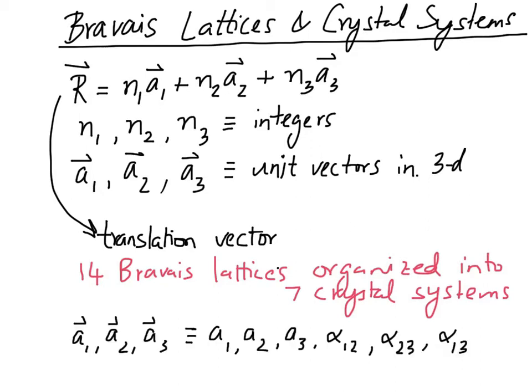Before we dive in, let us make an important observation. In three-dimensional space, a unit cell may be defined in terms of the three unit cell vectors A1, A2, and A3 — indicated as vectors by putting arrows at the top.